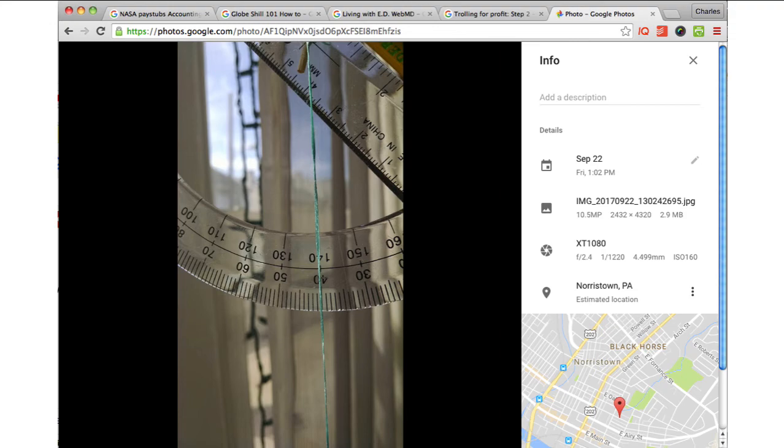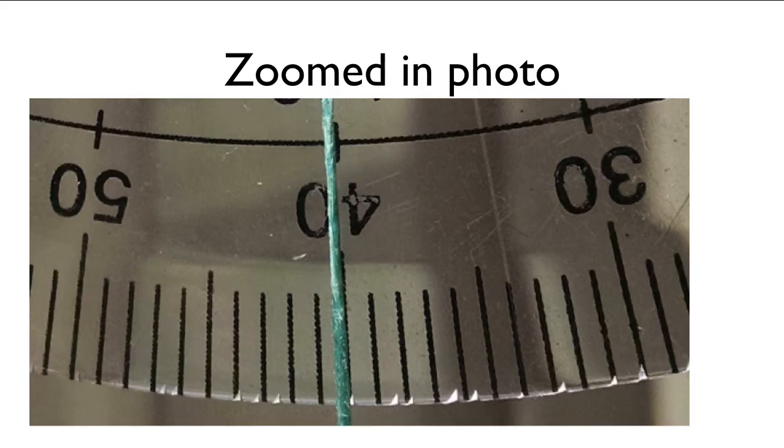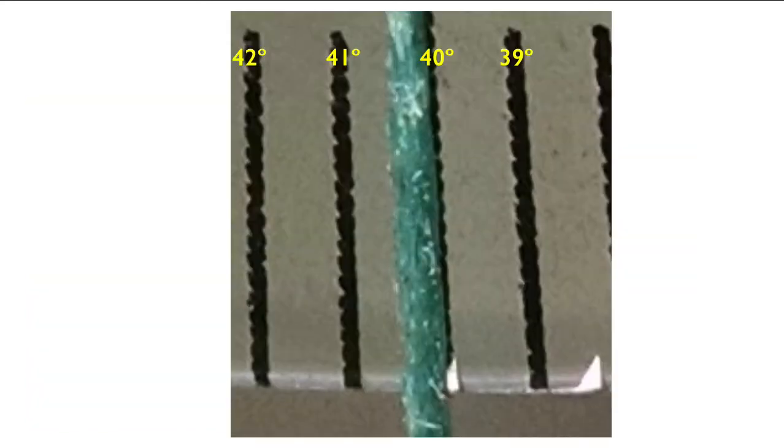So here's that photo again. What we're going to do is we're going to zoom in. So it looks like we're pretty close to 40 degrees. We're a little bit above 40 degrees. You can kind of see the 40 degree tick mark still there. Let's zoom in some more. Alright, so there's the 40 degree tick mark in the middle. And let's zoom in even more.